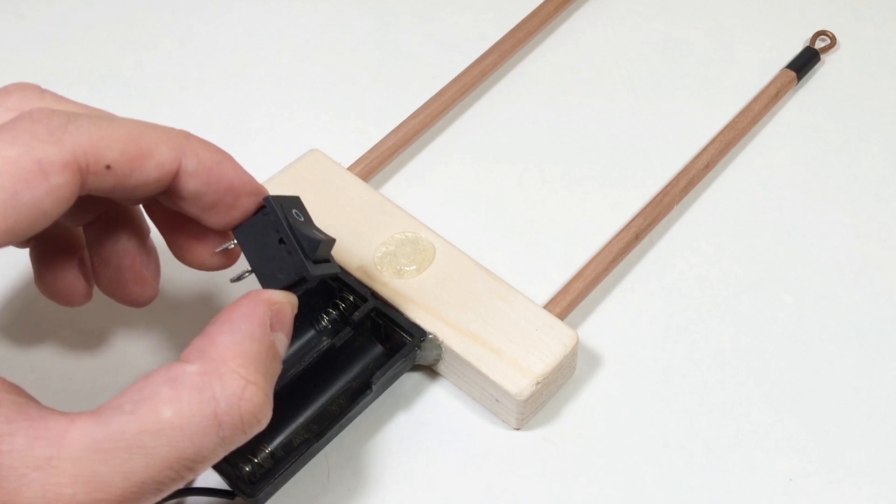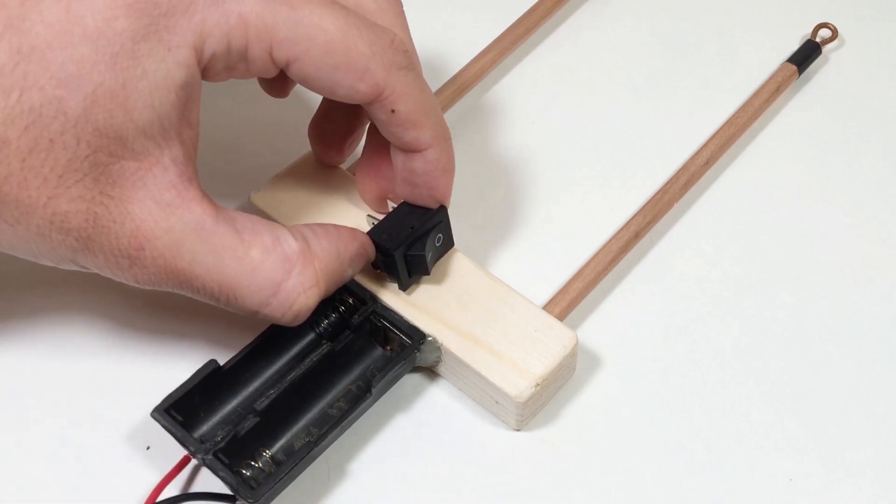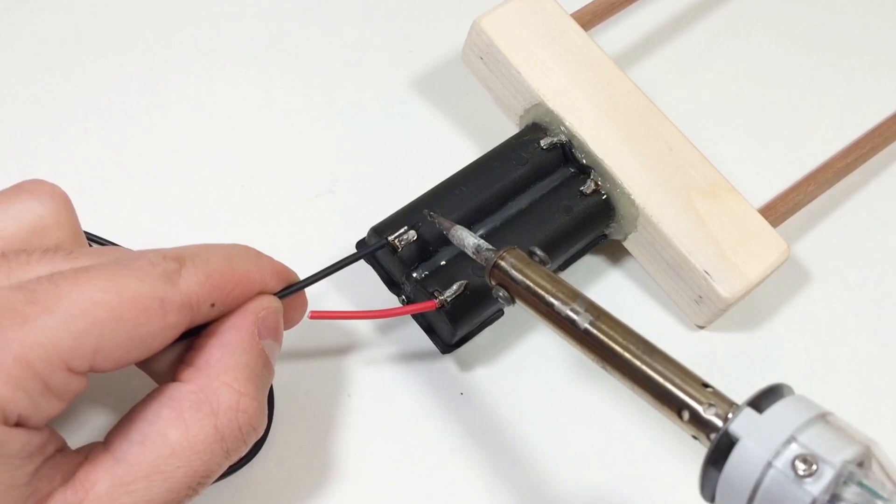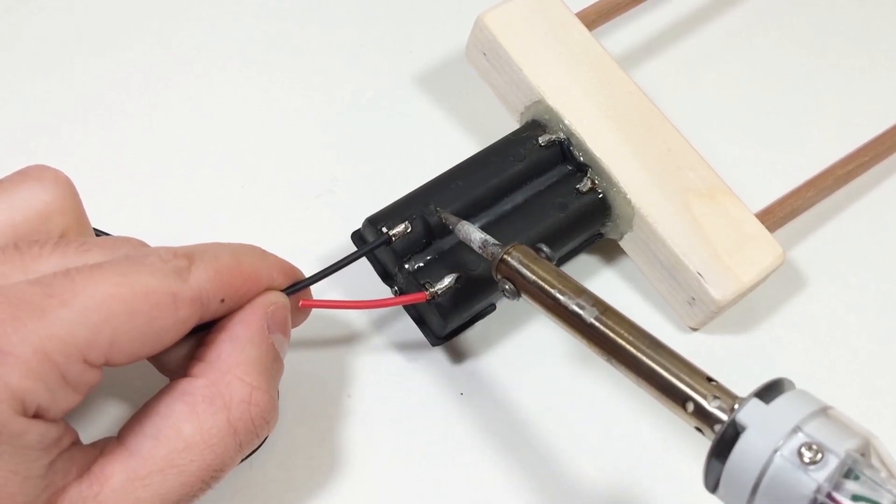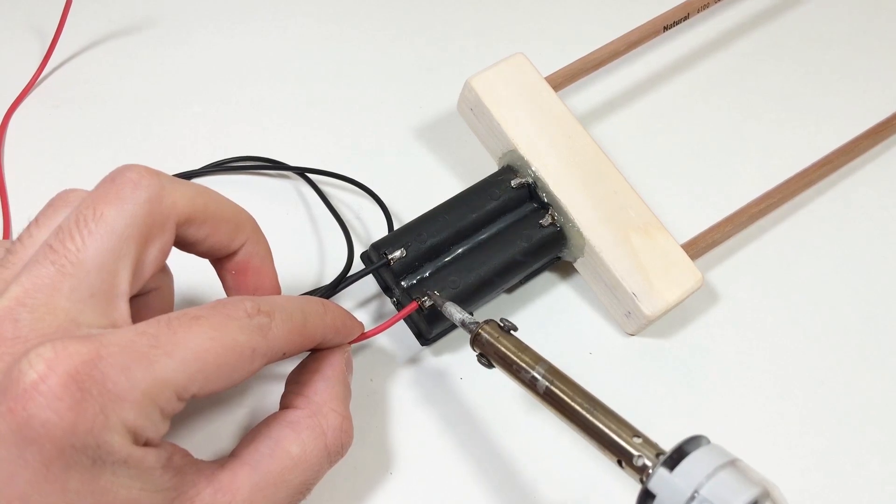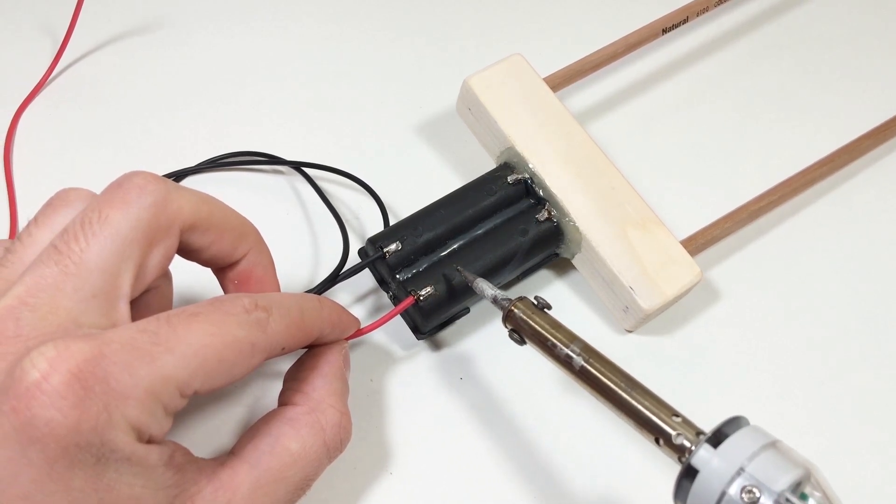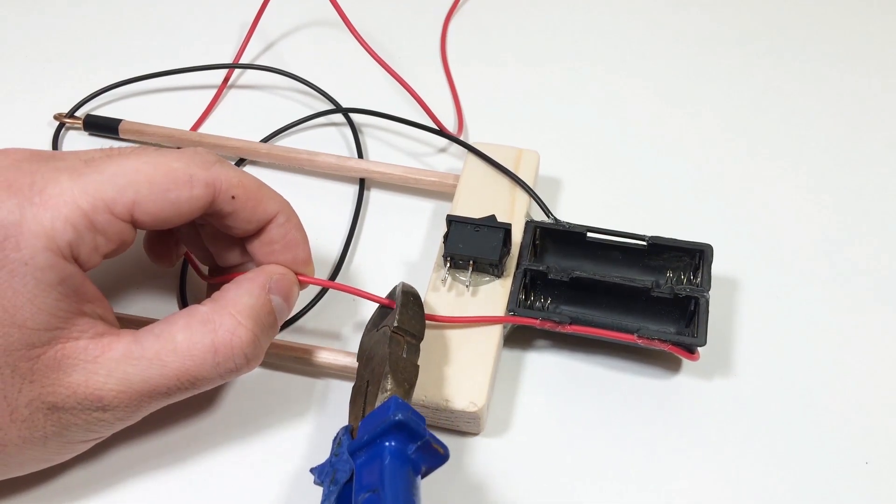Next, install a small on-off switch for easy control. Wire everything up like this. One wire from the battery pack goes to the switch, the other wire connects straight to one of the copper contacts, and from the switch, connect a wire to the second copper contact.